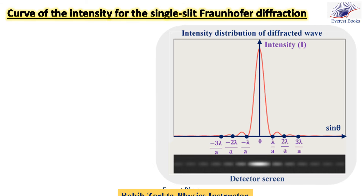This graph shows the intensity of the light on the viewing screen for the single slit Fraunhofer diffraction as a function of sine theta, where theta is the diffraction angle. Look at the figure. Zero corresponds to the center of the central bright fringe. Lambda over a corresponds to the center of the first dark fringe on the right side, and minus lambda over a corresponds to the center of the first dark fringe on the left side of the central bright fringe.